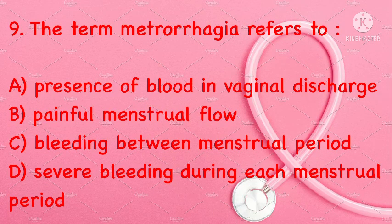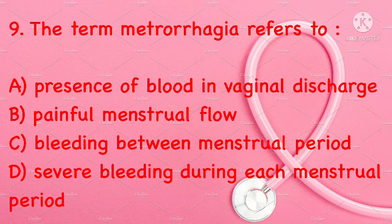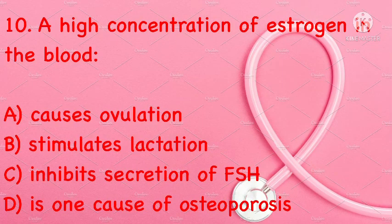The term metrorrhagia refers to: presence of blood in vaginal discharge, painful menstrual flow, bleeding between menstrual periods, or severe bleeding during each menstrual period. Correct answer: bleeding between menstrual periods.